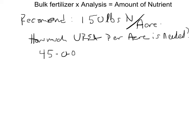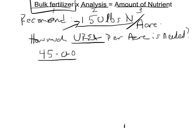So we use this problem again, except we kind of work it backwards in this case. So in this case, of these three pieces of the puzzle that we need to work this fertilizer problem, we don't need 150 pounds of urea. We need 150 pounds of nitrogen. So that's our actual amount of nutrient. We have the analysis. We know that urea is 45% nitrogen. But we don't have how much bulk fertilizer we actually need to put on. This is the thing that we're going to solve for.